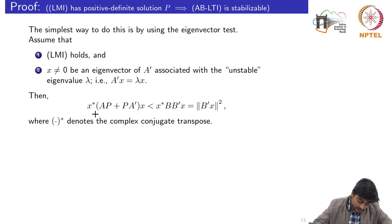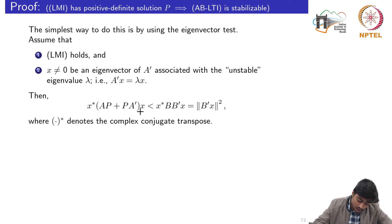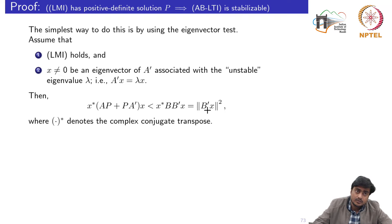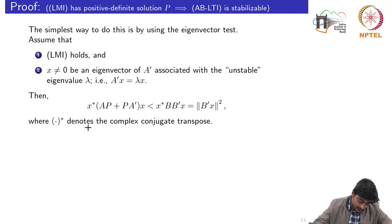Forming the quadratic form of the left-hand side of the Lyapunov equation and using that eigenvector, we form x-star times this matrix times x, which should be less than x-star B B-transpose x. Using the property of matrix norms, I can write this as the squared norm of B-transpose x, where star denotes the complex conjugate transpose.